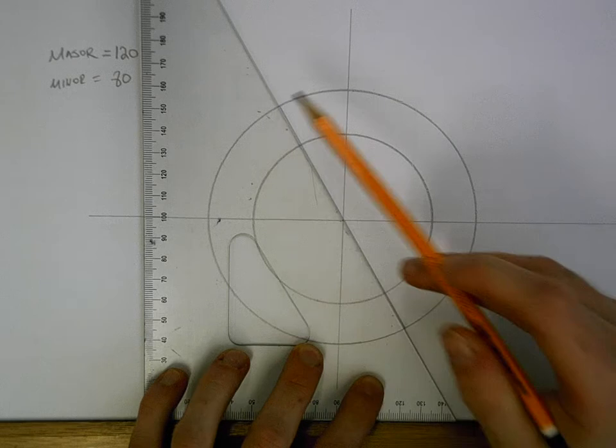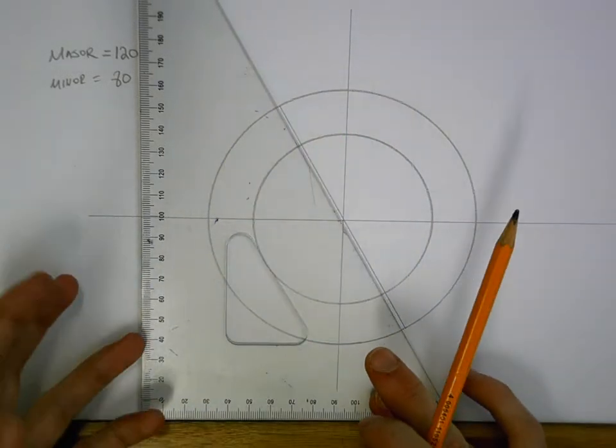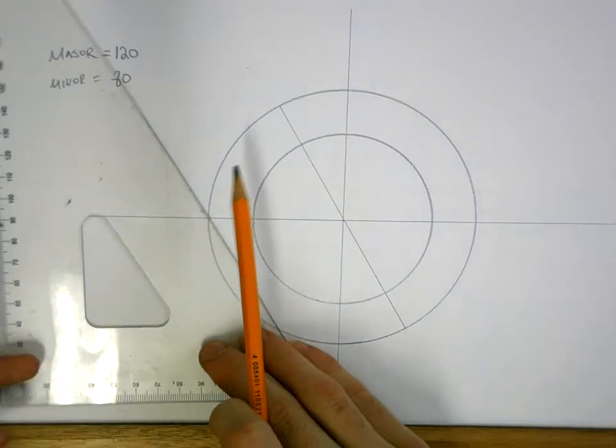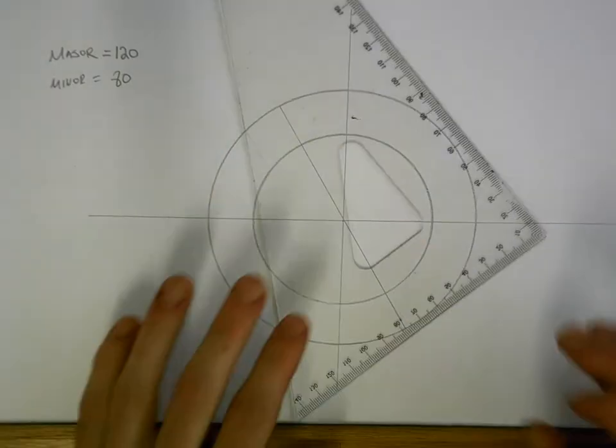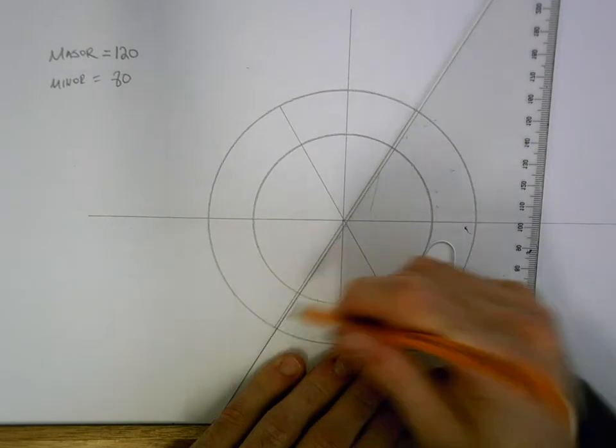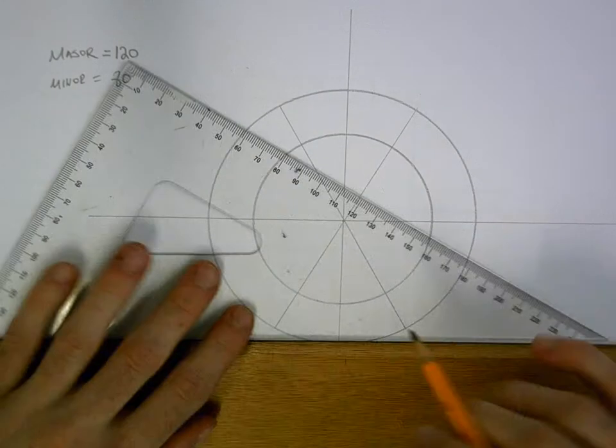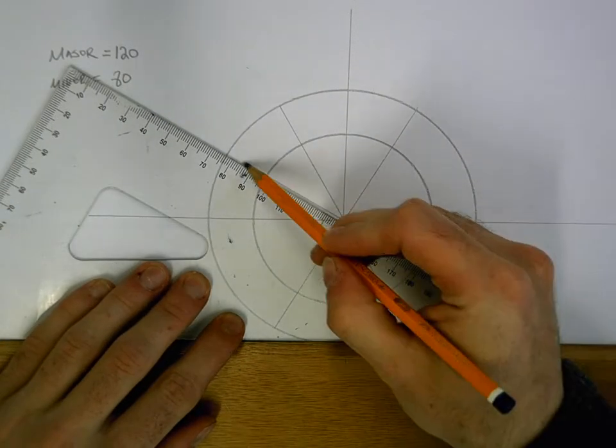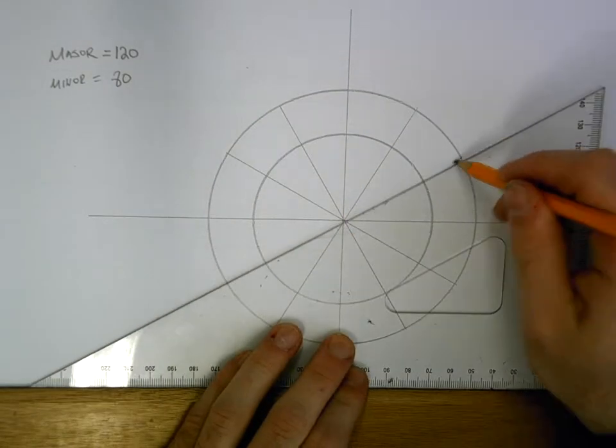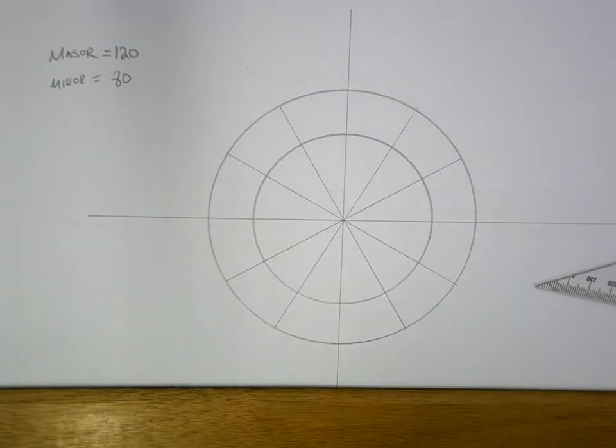So in total, we'll have a 60 degree going in both directions, a 30 degree going in both directions, and we also have a vertical and horizontal. So that's going to leave us with 12 equal segments, like 12 slices of a pie. So we divide that up, and you can see our 12 segments.